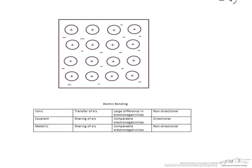So this table sums up the type of bonding. Notice the transfer versus the sharing of electrons, the difference in electronegativities versus the comparable electronegativities. But one term that we haven't discussed is directional.